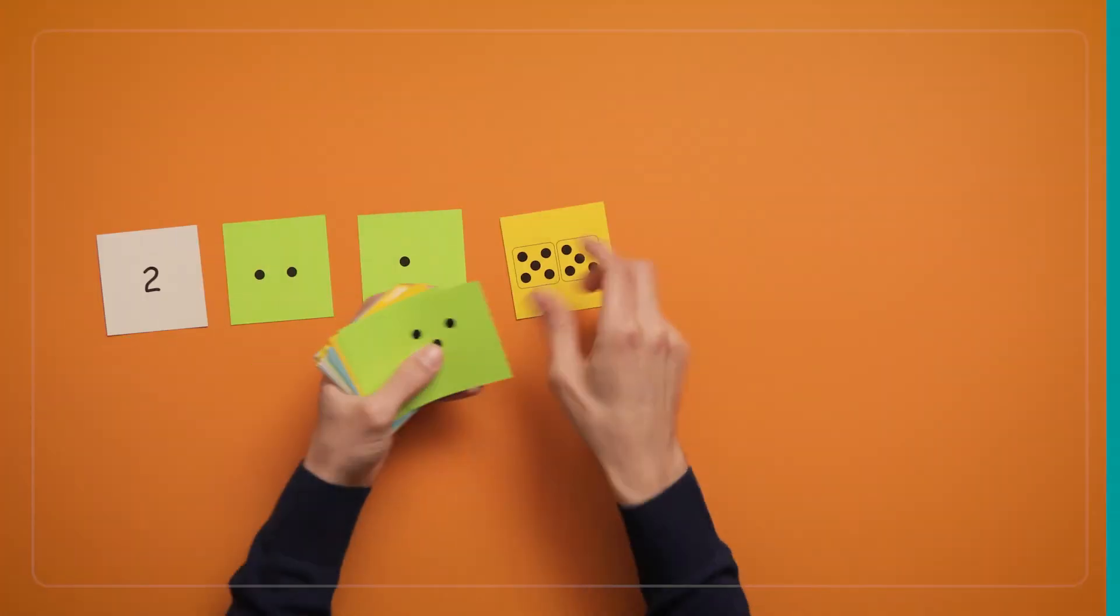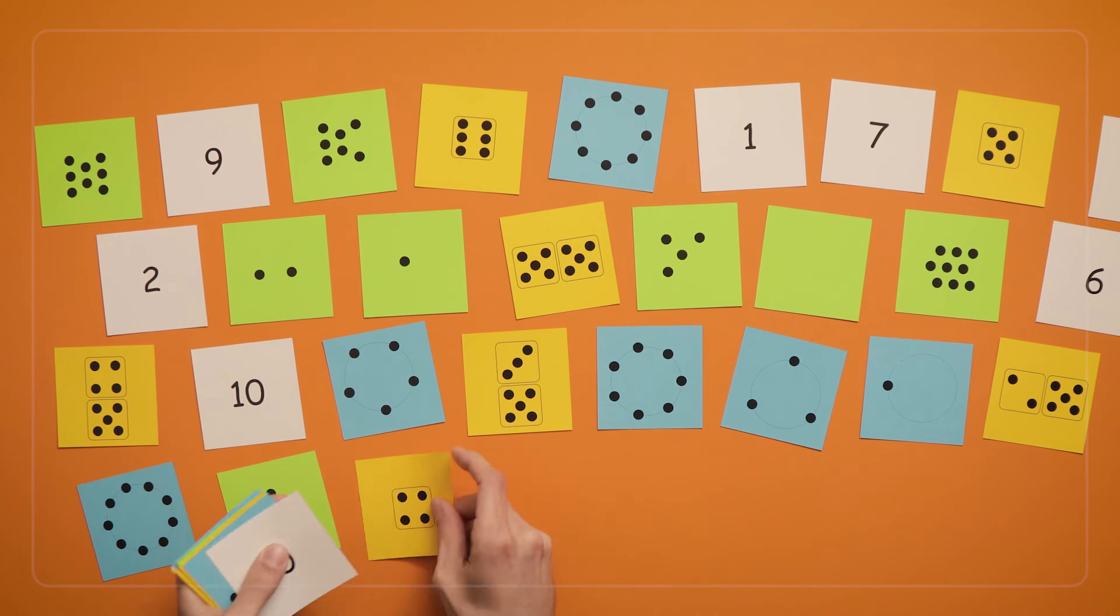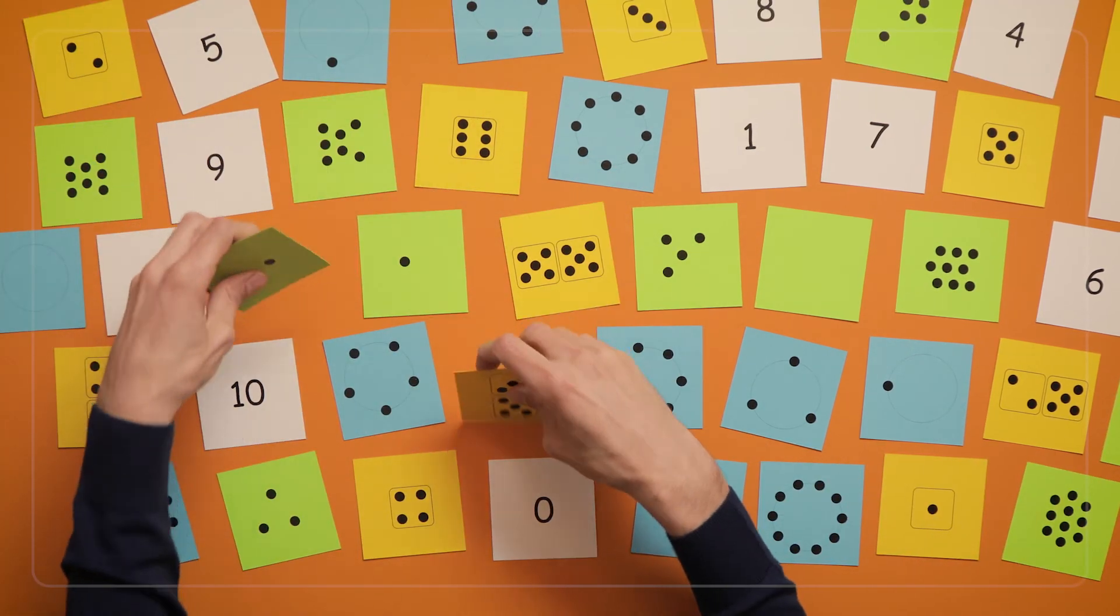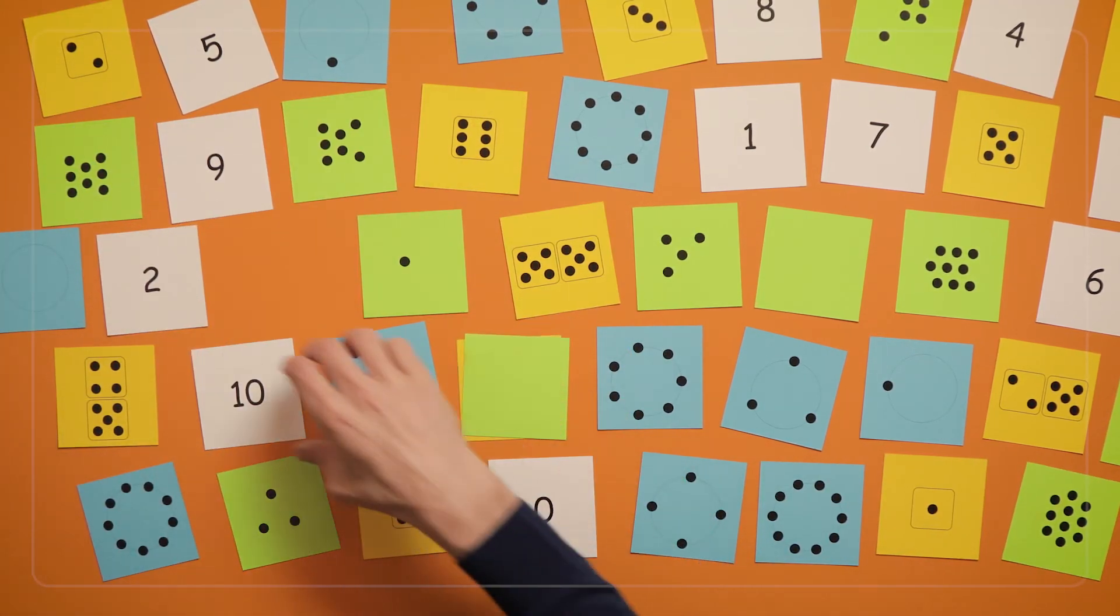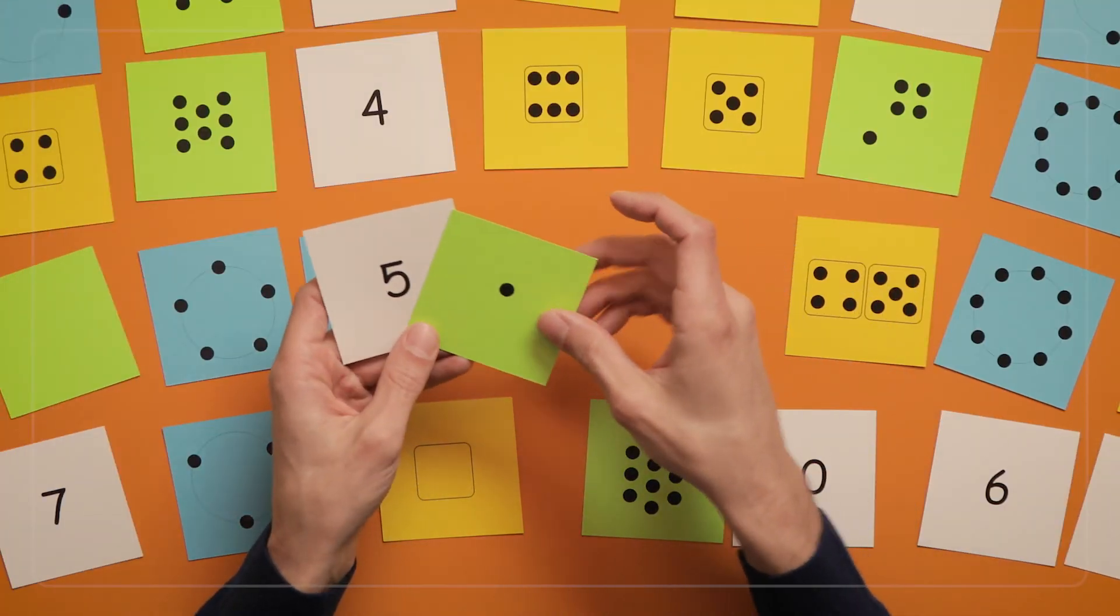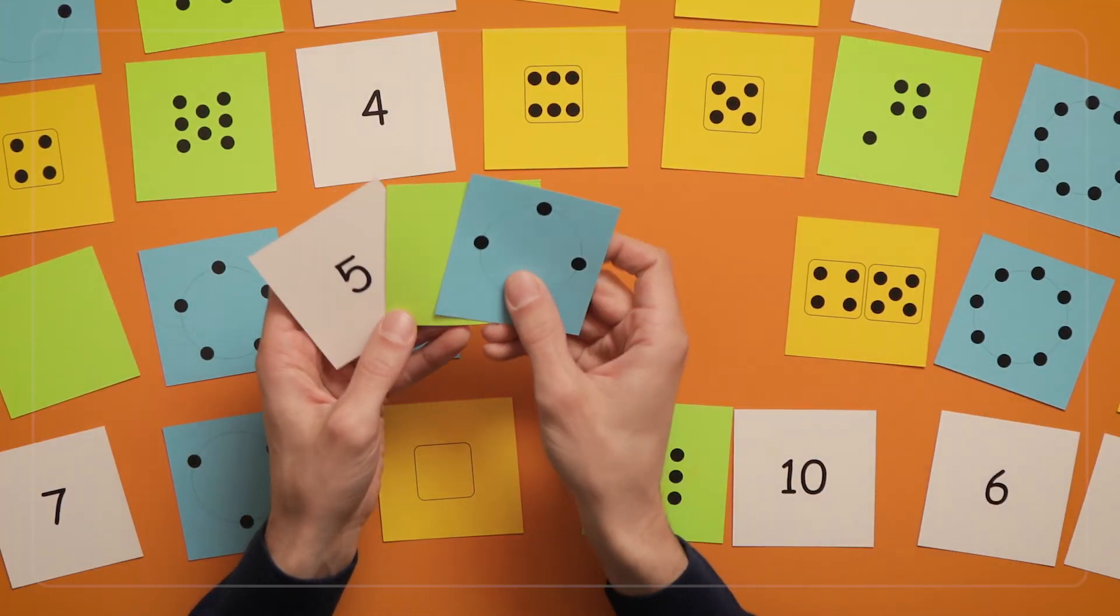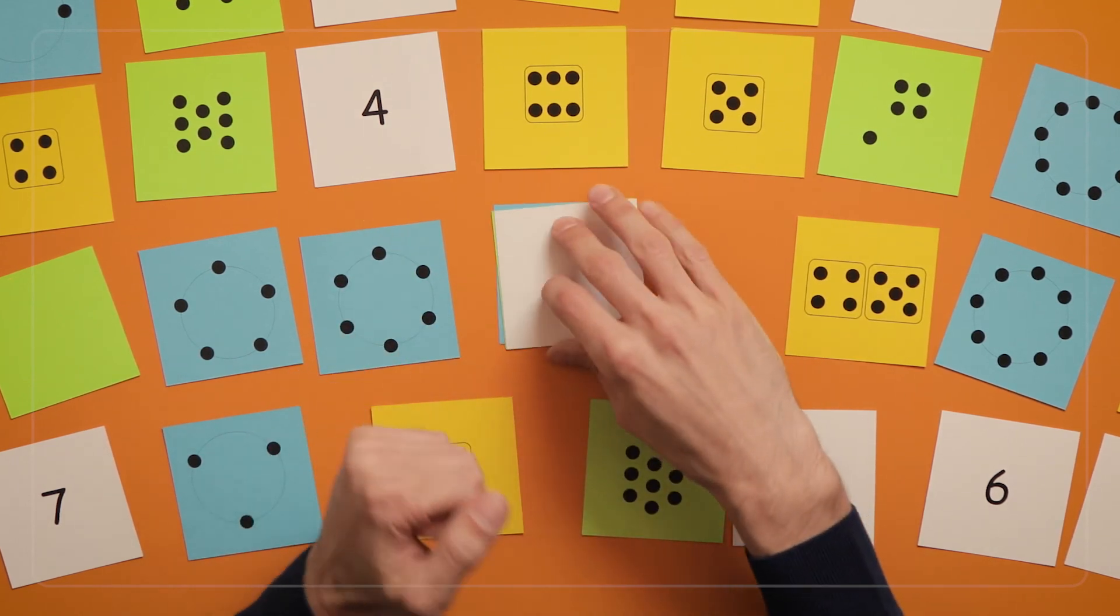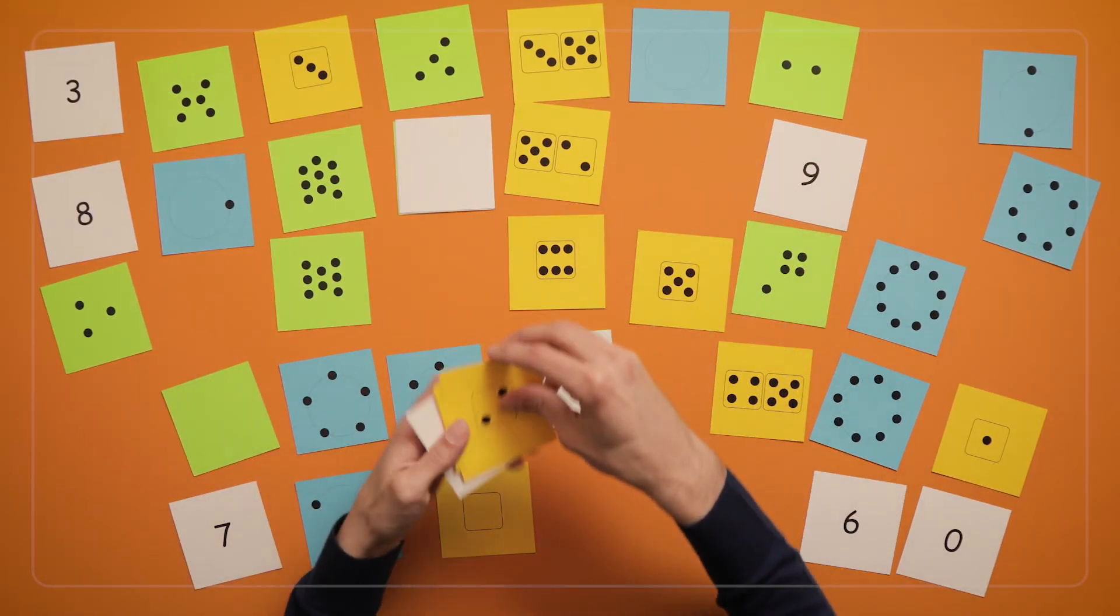For an extra challenge, you can play this game with more dot cards, the numeral cards, and you can try adding up to numbers other than 5. For example, by playing Make 10. You can even use combinations of 3 cards to add up to 5 or more, which lets you keep playing this game as kids get older.